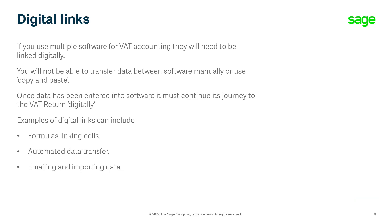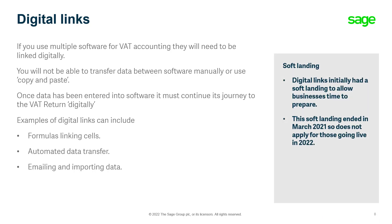If you use multiple softwares for accounting, you may need to consider digital links. This may not apply if Sage is your sole software responsible for processing transactions and submitting VAT returns. However, if you're transferring data from one piece of software to another, you may need to consider whether the transfer of this data is a digital link. Digital links allows importing of data, automatic transfer of data and formulas linking cells together, but does not permit manually re-keying data or copying and pasting between software. Initially HMRC allowed a soft landing period for digital links, however this ended in March 2021, so digital links will need to be considered from the outset if you're going to go live in April 2022.